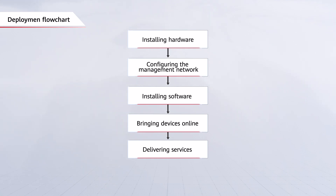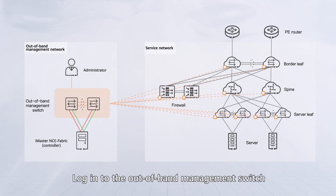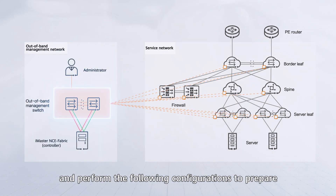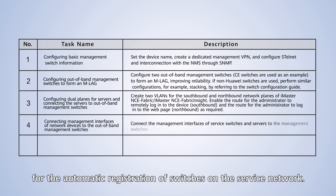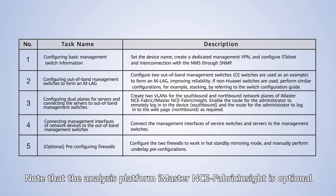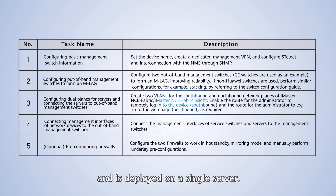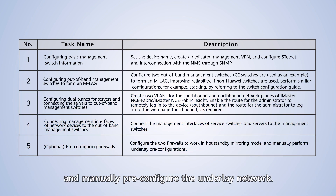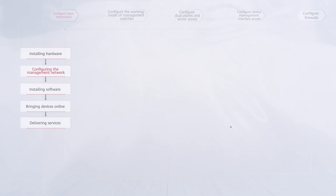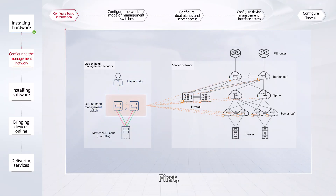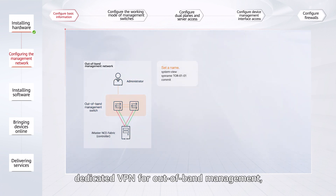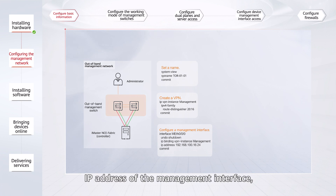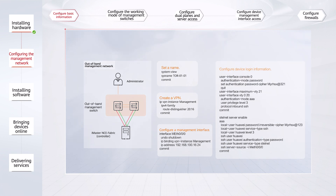In phase two, you need to configure the out-of-band management network. Log in to the out-of-band management switch and perform the following configurations to prepare for the automatic registration of switches on the service network. Note that the analysis platform iMaster NCE Fabric Insight is optional and is deployed on a single server. The firewall is also optional. You need to log into the firewall and manually pre-configure the underlay network. First, configure the device name, dedicated VPN for out-of-band management, IP address of the management interface, and basic functions such as device login information for the management switches.